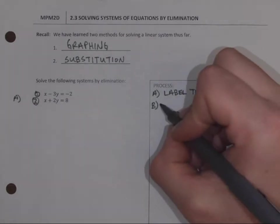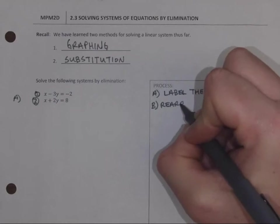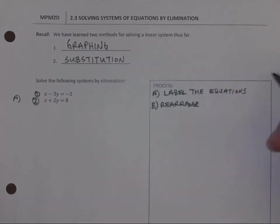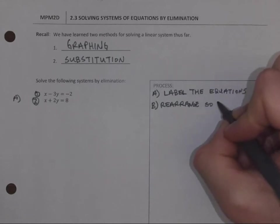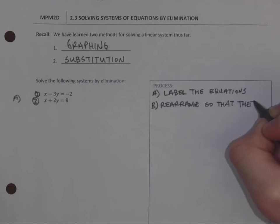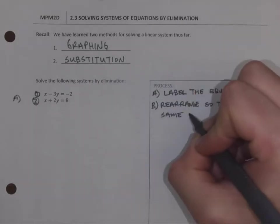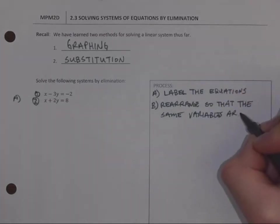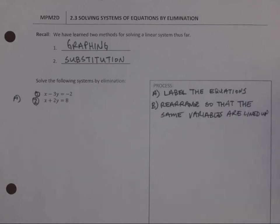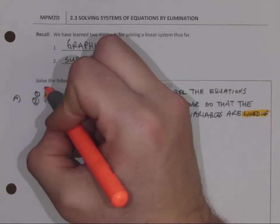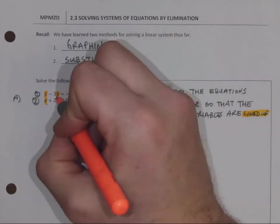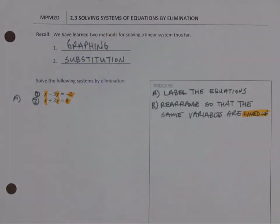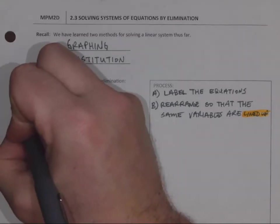The next step, I'm going to rearrange so that the same variables are lined up. If I use a highlighter to see that they're lined up, all the X terms are over top of the X terms, all the Y terms are over top of the Y terms, and all the numbers, the constants, are over top of the constants. It doesn't matter what side of the equation they're on, but that they're actually lined up. So there's step B.